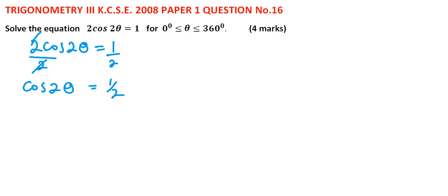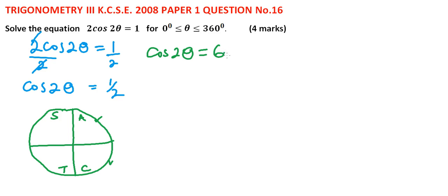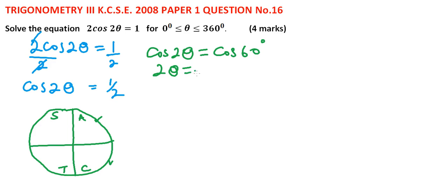Using the unit circle, we can identify where each trig ratio is positive: all are positive in Q1, only sine in Q2, only tangent in Q3, and only cosine in Q4. This means cosine is positive in the first and fourth quadrants. The angle whose cosine is 1/2 in the first quadrant is 60°, so cos(2θ) = cos(60°), giving 2θ = 60°.